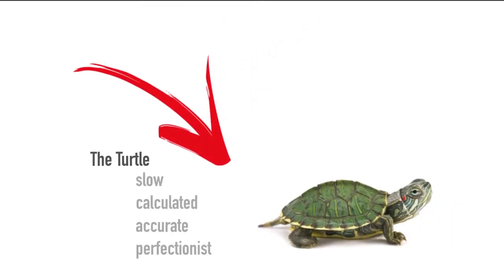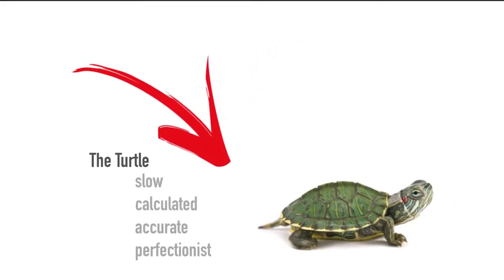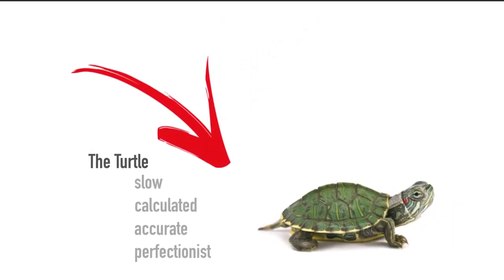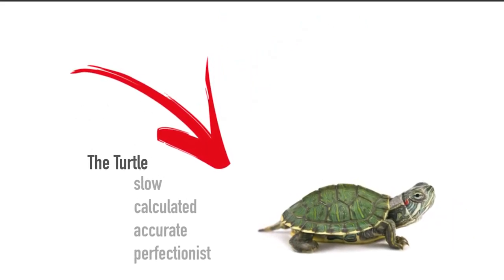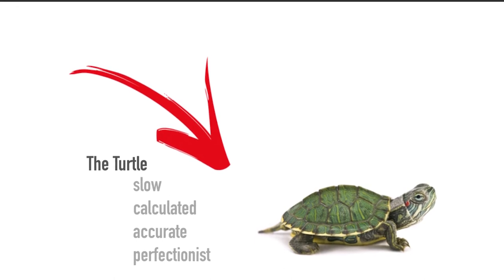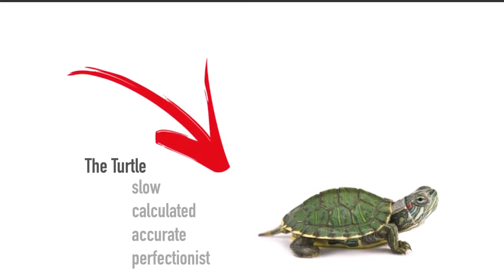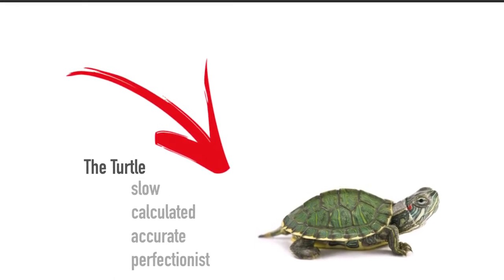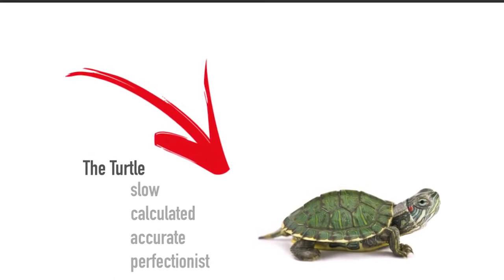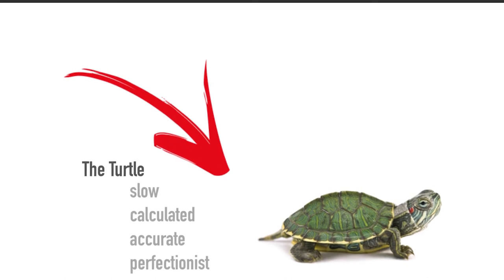Turtle — perfectionist, slow, calculated, accurate. That's a turtle. A turtle is going to be methodical. How many turtles? Who's a turtle?